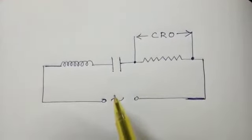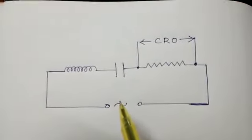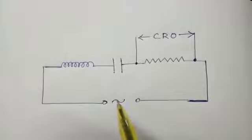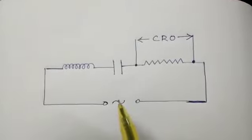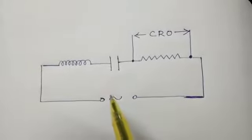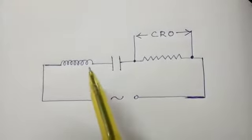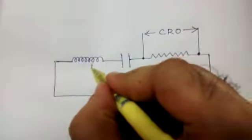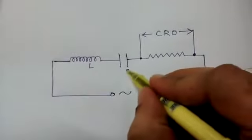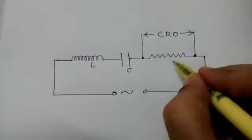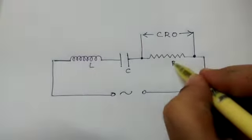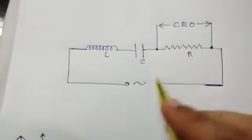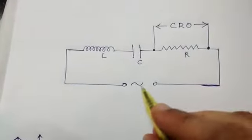This video explains the procedure to perform the LCR circuit experiment in a physics lab. An LCR circuit contains an inductance of value L, a capacitance of value C, and a resistance of value R, which are connected in series with an AC source.